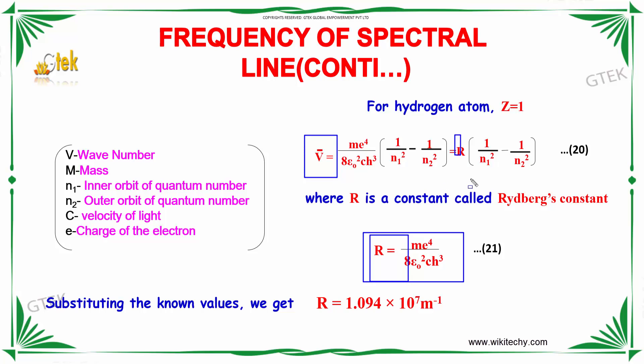So ν̄ = R × (1/n₁² - 1/n₂²). Substituting the known values, we get R = 1.094 × 10⁷ m⁻¹.